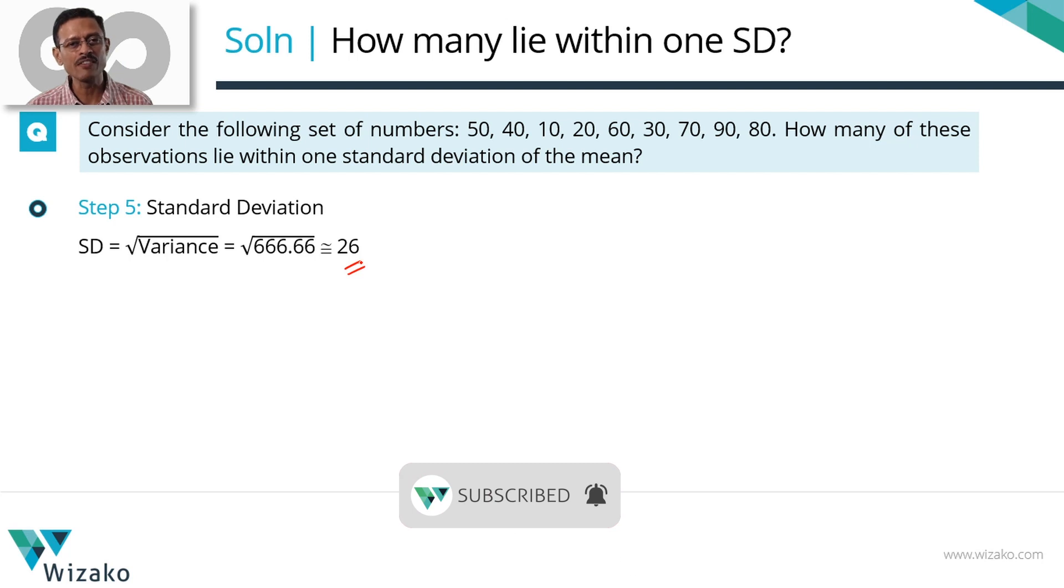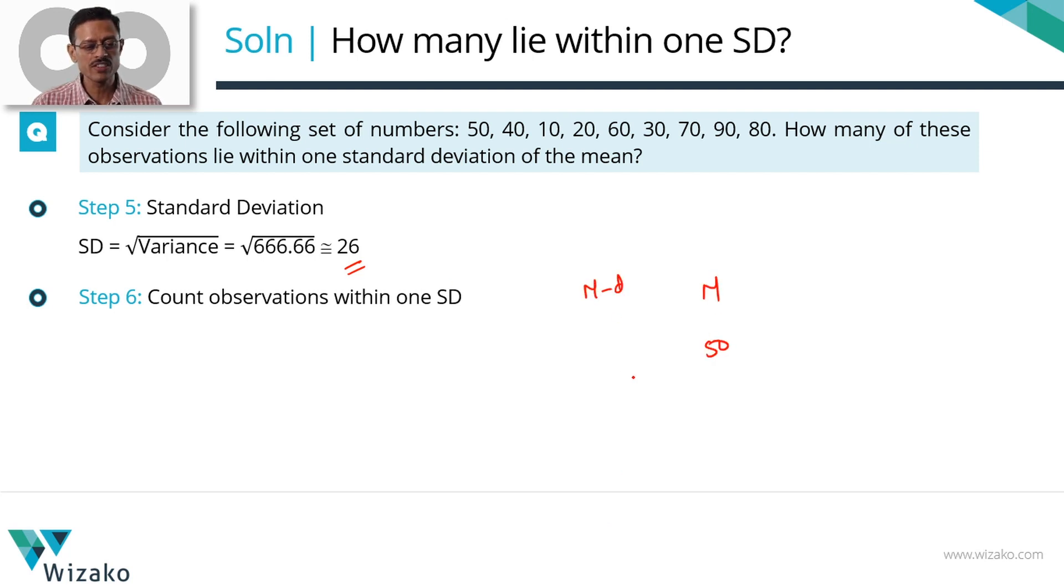Step 2. Having computed the standard deviation, let's count the elements that lie within one standard deviation. What is the mean? Mean is 50. Mean minus deviation, we know the deviation is 26, so it is 50 minus 26. Mean plus deviation is 50 plus 26. This number works out to 24. This works out to 76. So we need to find out of these nine observations mentioned here, how many of them lie between 24 and 76.